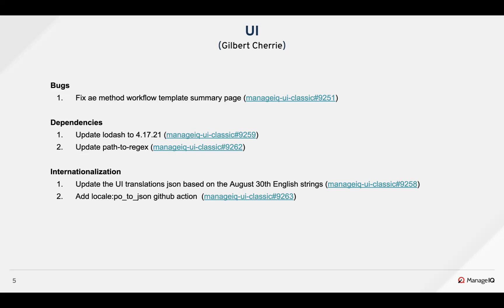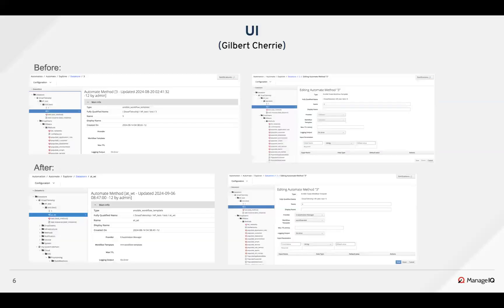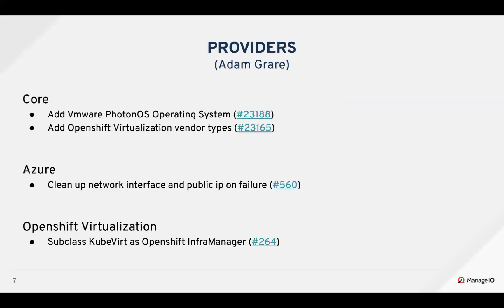On the internationalization side, Joe has been working on getting the English translations in, and also trying to automate some of the work behind actually getting these translation files in. You can see the A method summary template page before and after, and we fixed a couple of bugs in there. Over to Adam on the providers.